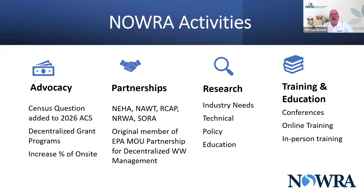Some of our core activities include advocacy. We are a 501(c)(6), which means that we can lobby. We have a part-time lobbyist in D.C. who does work for NAWRA and our membership. We've made some great inroads the last couple of years. There are decentralized grant programs through USDA and EPA providing grants and low-interest loans for on-site systems repairs and replacements. One key thing we've been working on is the census question, which disappeared in the early 1990s, but working through our EPA partnership, we've been able to reinstate it. It should appear in the 2025 or 2026 American Community Survey.